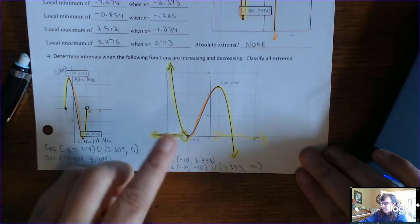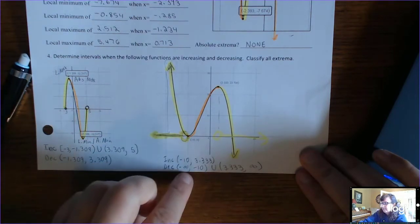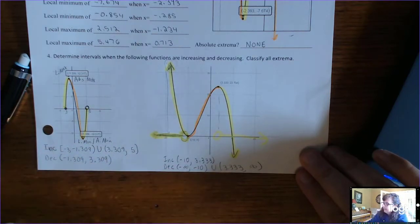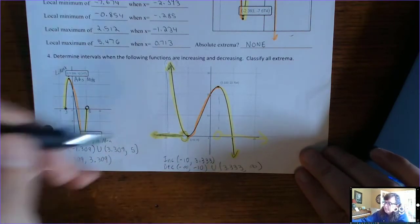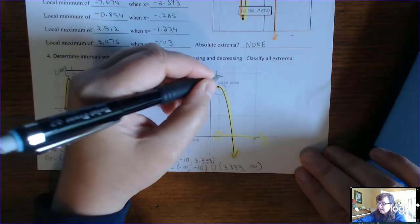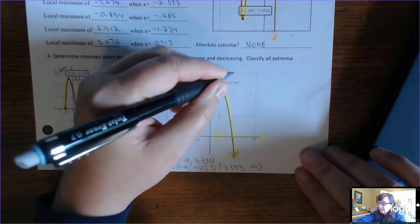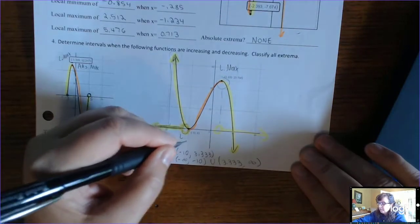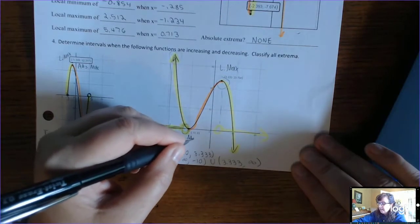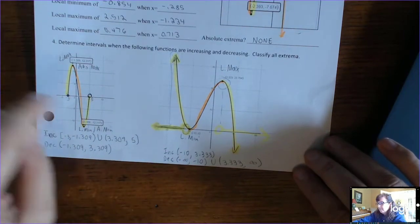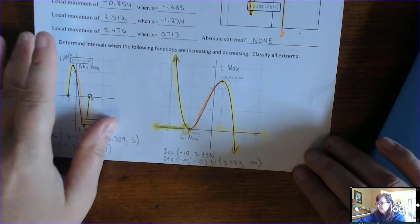These are both decreasing. Local extrema: this is a local max and this is a local min. It doesn't have any absolute maxes or mins on this one.